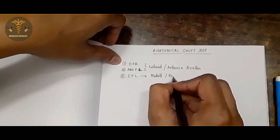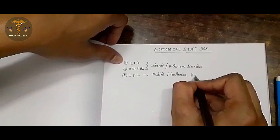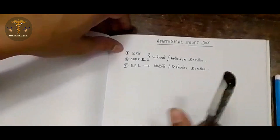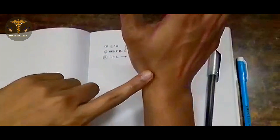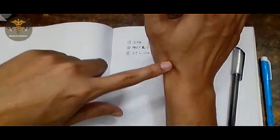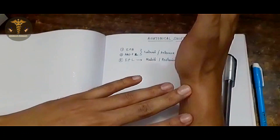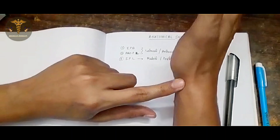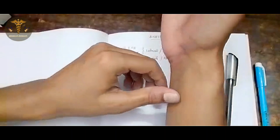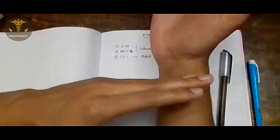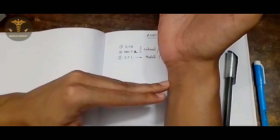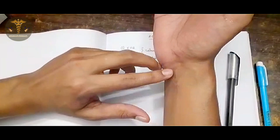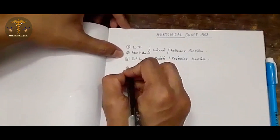The anatomical snuff box is formed by a roof and a floor. The floor is formed by carpal bones — specifically scaphoid and trapezium. As you know, there are eight carpal bones: the proximal row contains scaphoid, lunate, triquetral, and pisiform, and the distal row contains trapezium, trapezoid, capitate, and hamate.